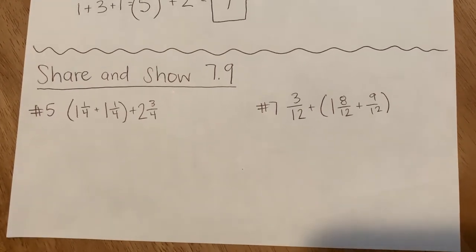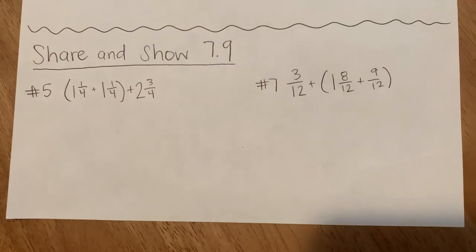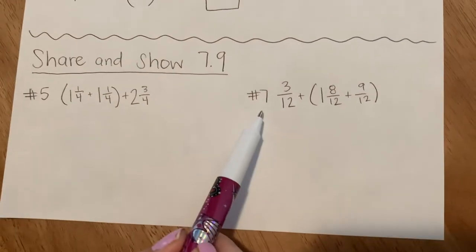So our share and show for 7.9, we are on page 436 and we are going over number 5 and number 7.